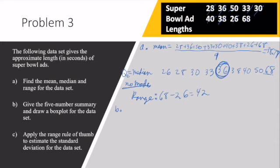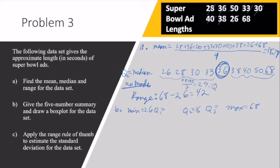For part B, I want us to give me a five-number summary and draw a box plot. So the five-number summary is min, Q1, Q2, Q3, and max. I know my maximum is 68, my minimum is 26, my Q2 is 36. Now I need to figure out Q1 and Q3. Q1 and Q3 mark the 25th percentile and the 75th percentile respectively. So I need to find the median for the lower half and the median for the upper half. I have to take 28 + 30 divided by 2, that gives me 29. That's my Q1. And I have to take 40 + 50 divided by 2, that gives me 45. That's my Q3.